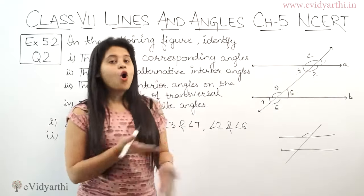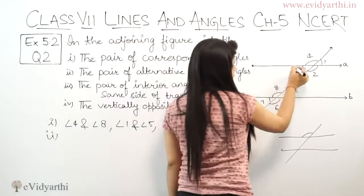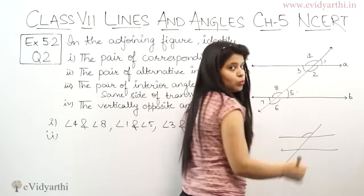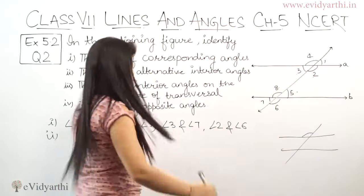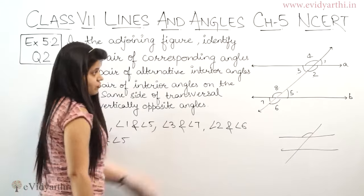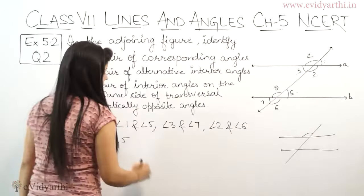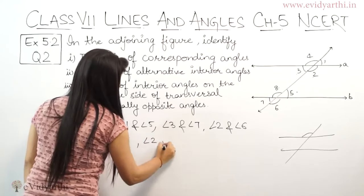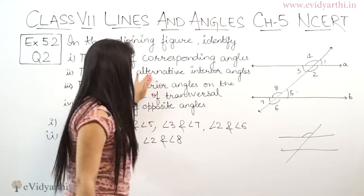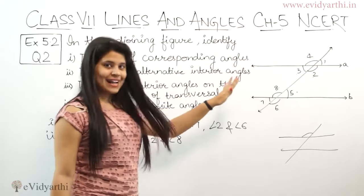Alternate means opposite. Like 3 and 5 are in opposite directions. Similarly 8 and 2 are diagonal. So angle 3 and angle 5, and angle 2 and angle 8. These both are what? Alternative interior angles.